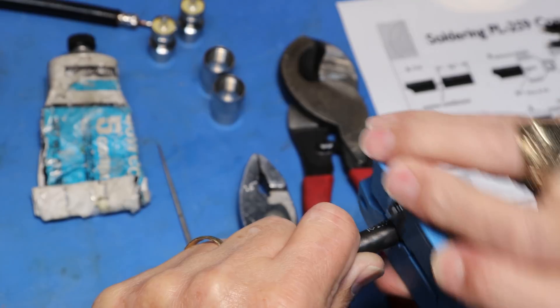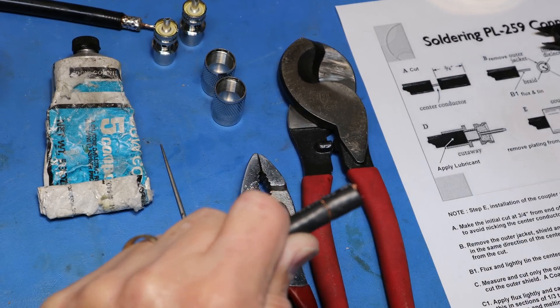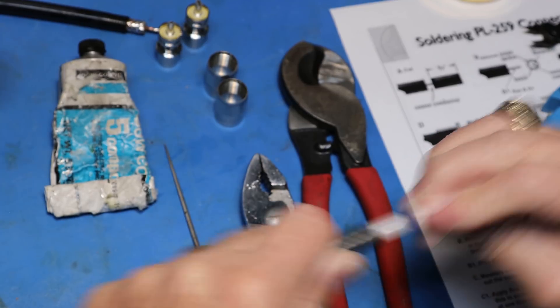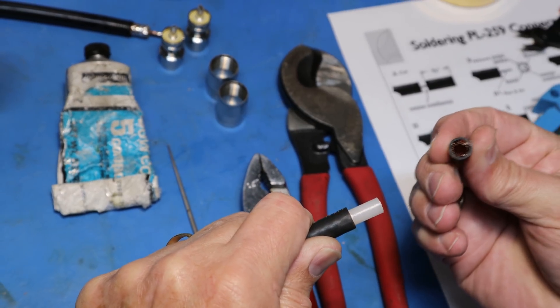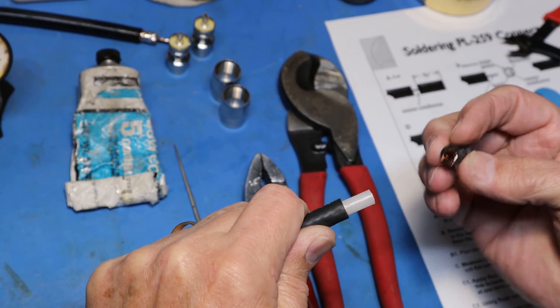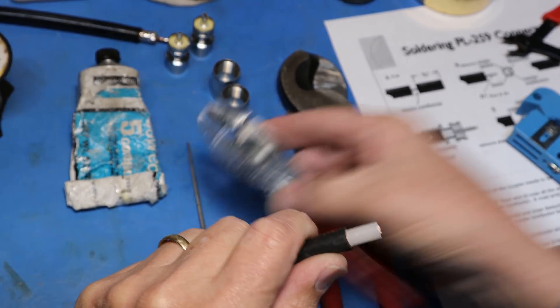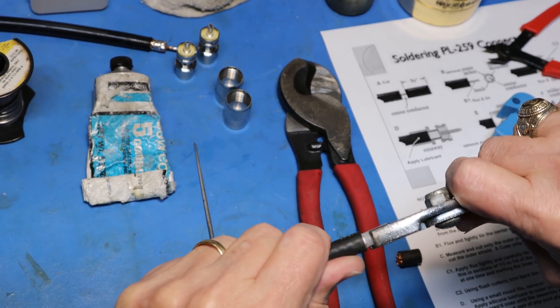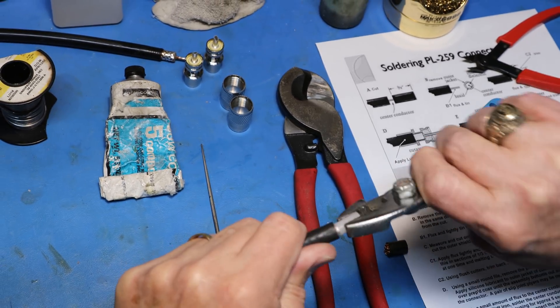You will feel the resistance become lower as you twist the tool around the coax. Once it is minimized, you can pull the outer jacket. You will notice the braid stayed attached to the outer jacket. And then you can twist the inner dielectric back and forth until it ultimately slips off the end.